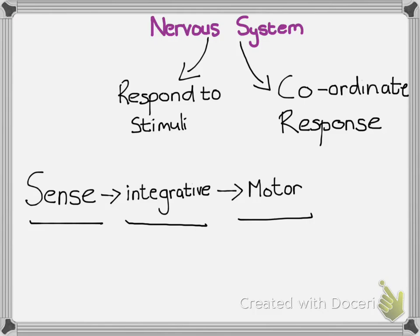Stimuli can be physical — things like temperature change and light intensity — but there can also be chemical changes in the environment, both outside and inside the body. The nervous system is one coordinating system that we have; the other is the endocrine system. The nervous system handles short-term coordination — things you need to respond to immediately — whereas the endocrine system deals with slower, long-term reactions.